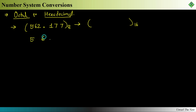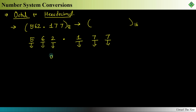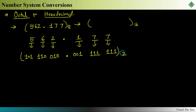I will write down the digits 562.177. For each digit, I write its binary in groups of three bits. For 2, the binary is 010. For 6, the binary is 110. For 5, the binary is 101. After the point, for 1 the binary is 001, for 7 it is 111, and for the second 7 it is also 111. This gives us the full binary of the octal number 562.177.